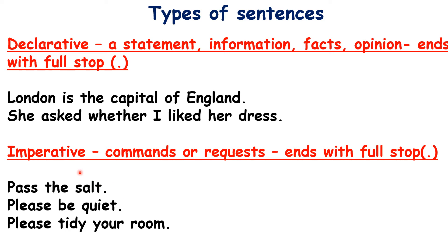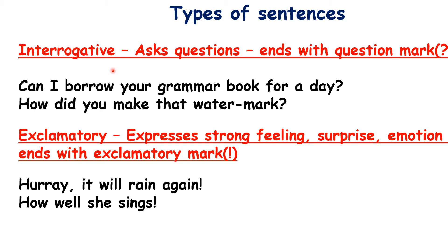Imperative sentences give commands or requests and they end with a full stop. Example: 'Pass the salt' — you are commanding your friend to give you the salt. 'Please be quiet' and 'Please tidy your room' are requests because you are using 'please.' Without 'please,' a sentence becomes a command — 'Listen to me' is a command; 'Please listen to me' is a request. All these are imperative sentences.